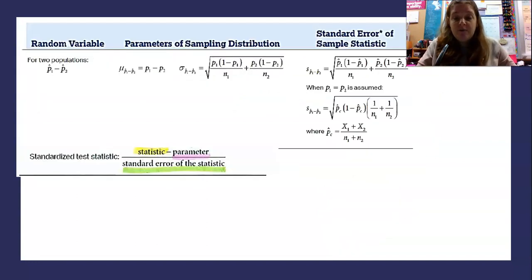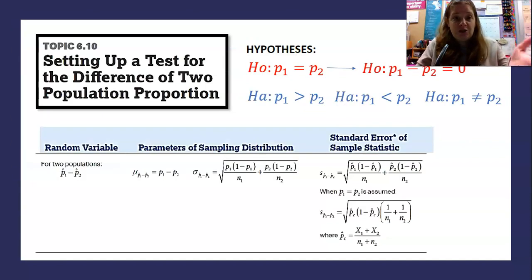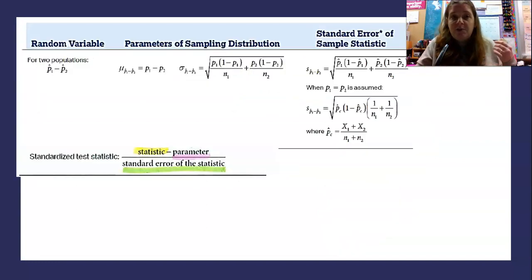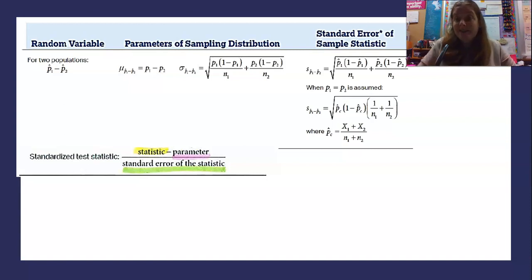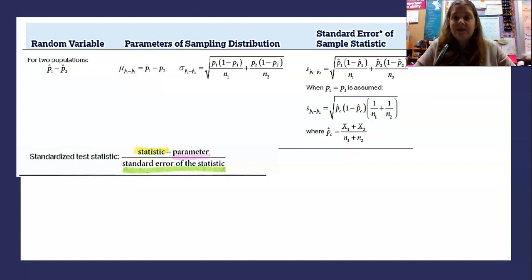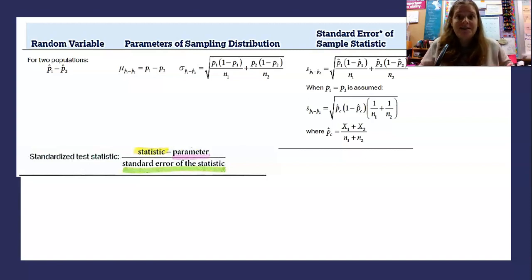On the AP Statistics formula sheet, we have the statistic, the parameters, and the standard errors. In a hypothesis test, what we want to pull out is the standardized test statistic. For proportions, that's going to be a Z, because we use the standard normal distribution to find probabilities. Unlike a confidence interval, we can't just look this up off a table — we actually have to compute it. This is essentially the Z score for the sample distance.